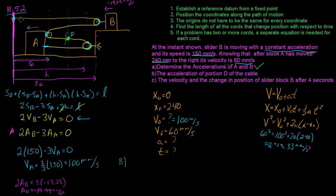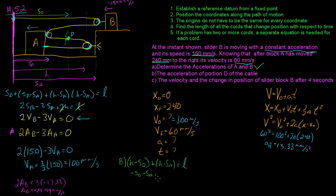Starting from point D, the rope length equation becomes: SD plus (H minus SD) plus (H minus SD minus SA) equals some length of rope. Simplifying: minus SD minus SA plus 2H equals L. Differentiating to get velocity: minus VD minus VA = 0. Differentiating again for acceleration: minus aD minus aA = 0.